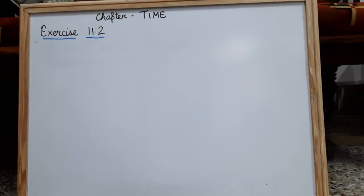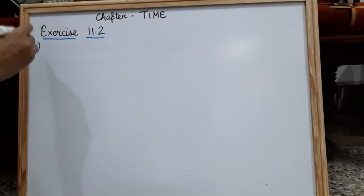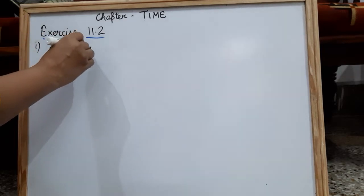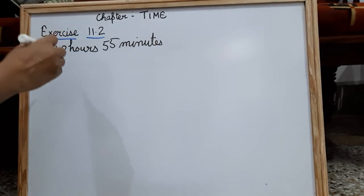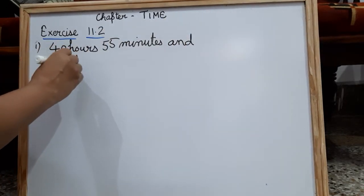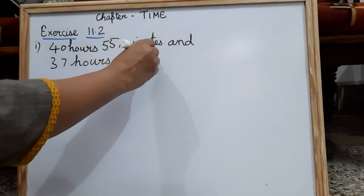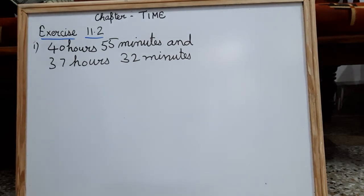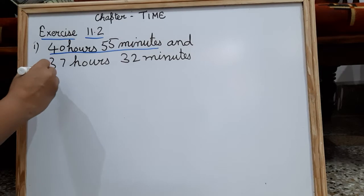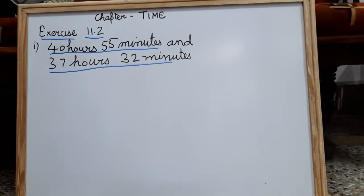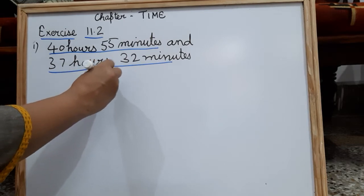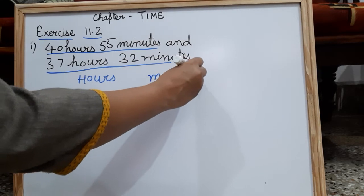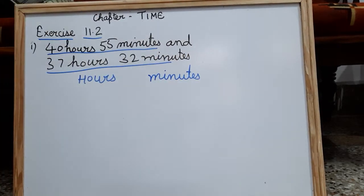For addition of measures of time, let me take one example. Let us take 40 hours and 55 minutes added to 37 hours and 32 minutes. The first thing is you have to arrange them in a column. Two measures of time are given — one is hours, another is minutes. Write the units on the top, and then write the time below that.